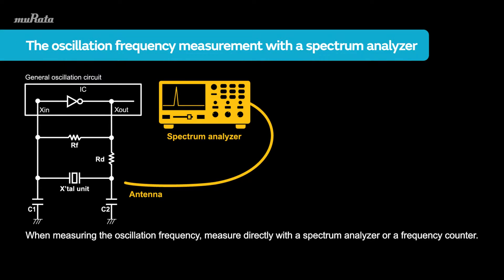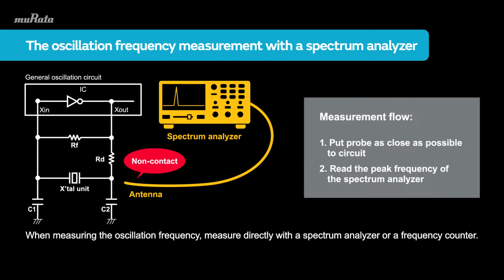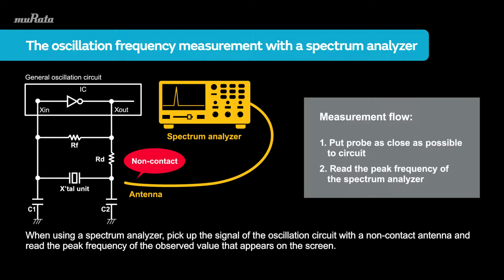When measuring the oscillation frequency, measure directly with a spectrum analyzer or a frequency counter. When using a spectrum analyzer, pick up the signal of the oscillation circuit with a non-contact antenna and read the peak frequency of the observed value that appears on the screen.